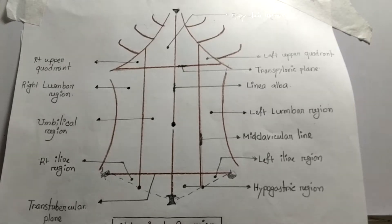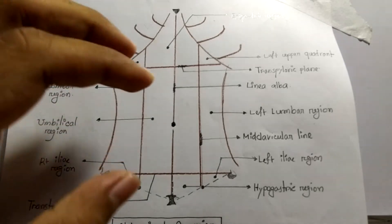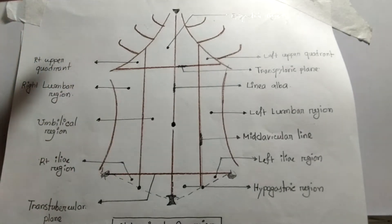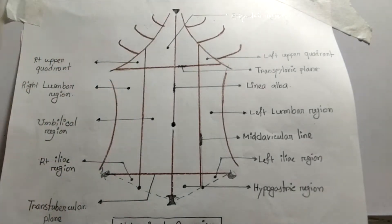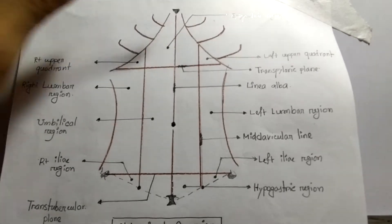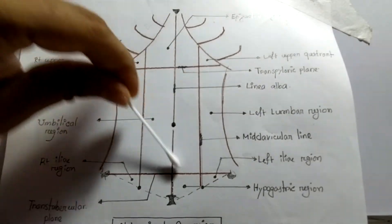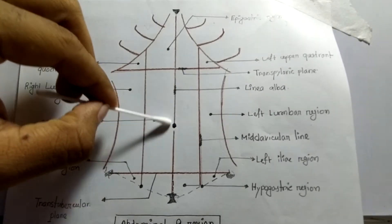First of all, we have to know the nine regions of the abdomen. We have to understand the region of the abdomen — that means from where to where the abdominal area is located. This is the costal plane, this is the thoracic part, and the rest of the part is the abdomen. This is the umbilicus, which is present just centrally.